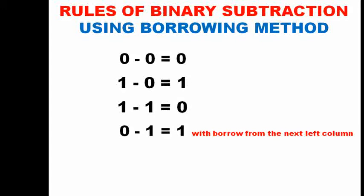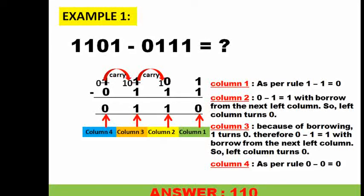Let us do the first example: 1101 minus 0111. What will be the result? The workout is shown on the screen. The numbers are in different columns — the rightmost column, column 1, is in green; the second column is in yellow; the third is in orange; and the fourth column is in blue.